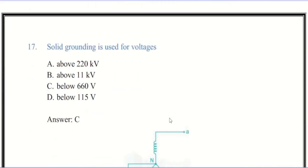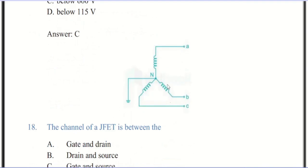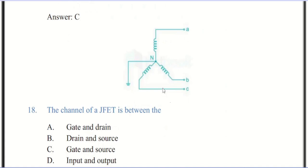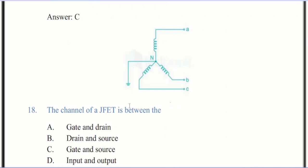Now we come to question number 17. Solid grounding is used for voltages below 660 volts. The correct answer is C. You can see the star connection diagram where solid grounding is connected. Solid grounding is adopted for voltage below 600 volts because of the higher point of fault energy level. A power system is said to be effectively grounded or solid grounded when the neutral of a generator, power transformer, or grounding transformer is directly connected to the ground through a conductor of negligible resistance and reactance.